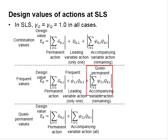While the rest of the variable actions are considered as the quasi-permanent actions. This is logical, as it is not likely to have all the variable actions undergo accidental load at the same time.